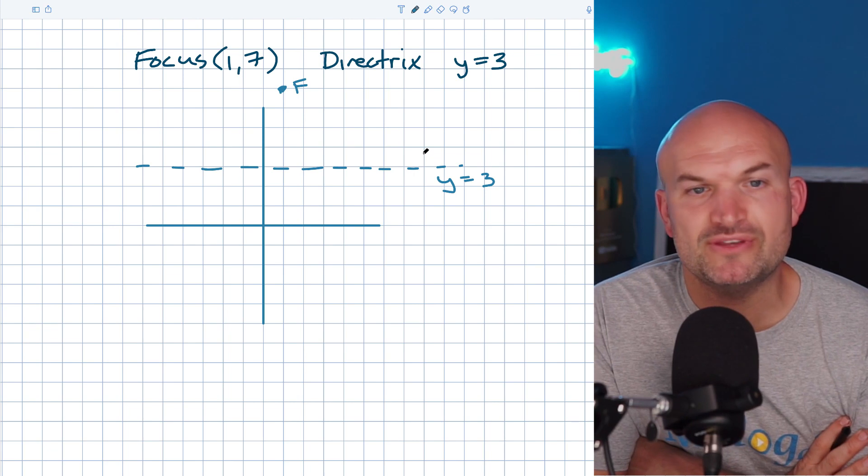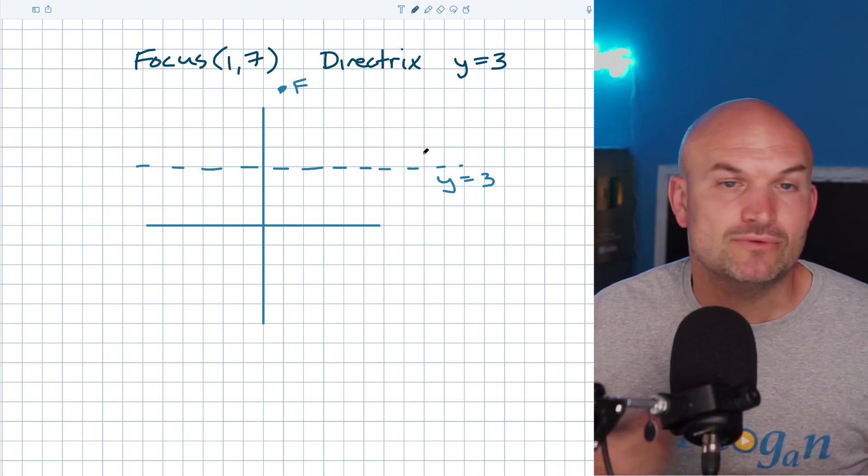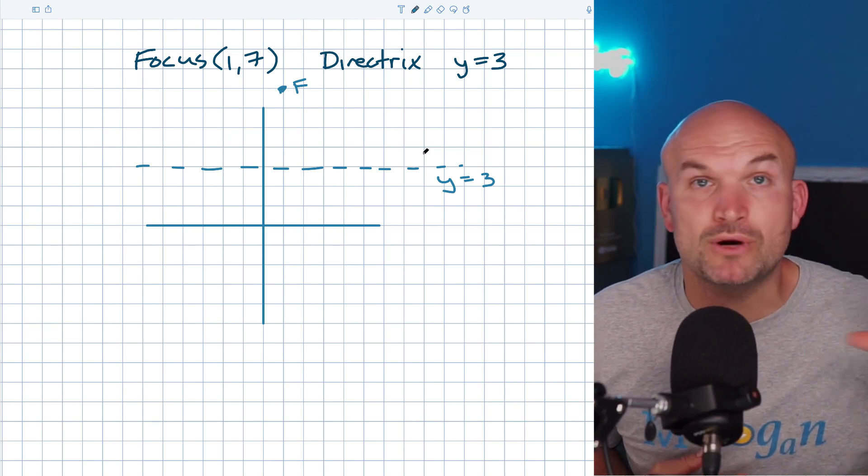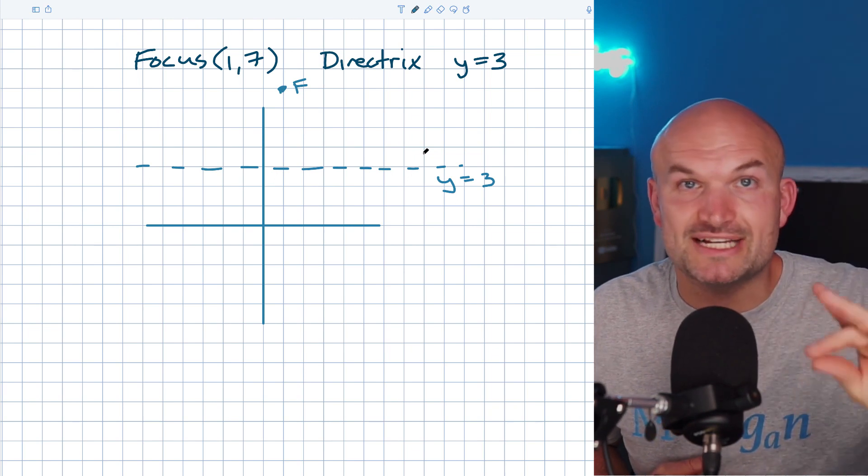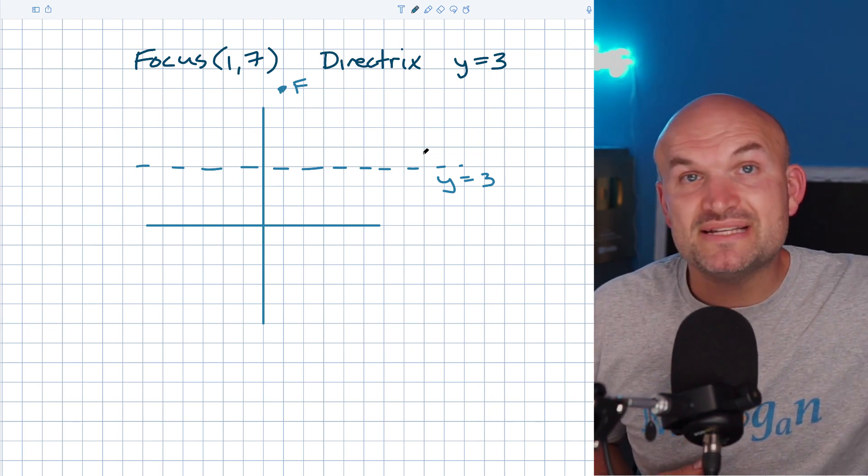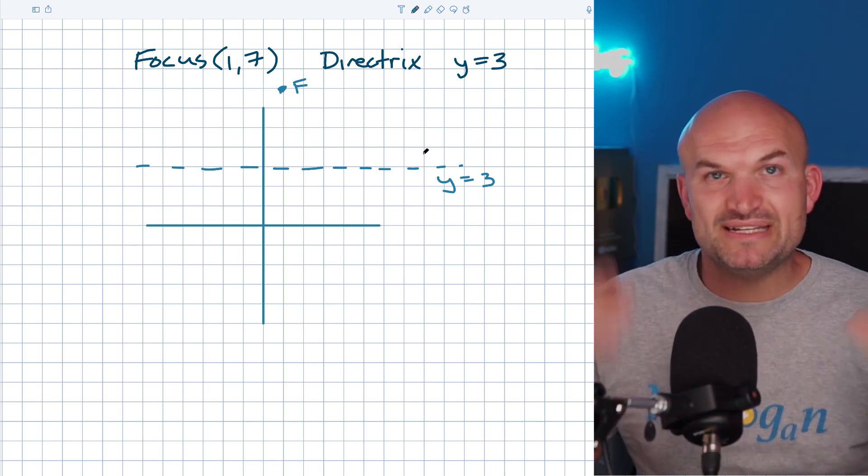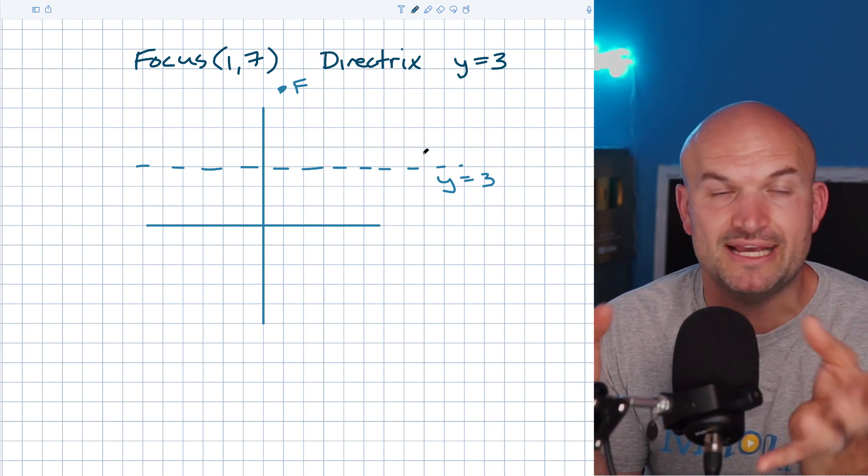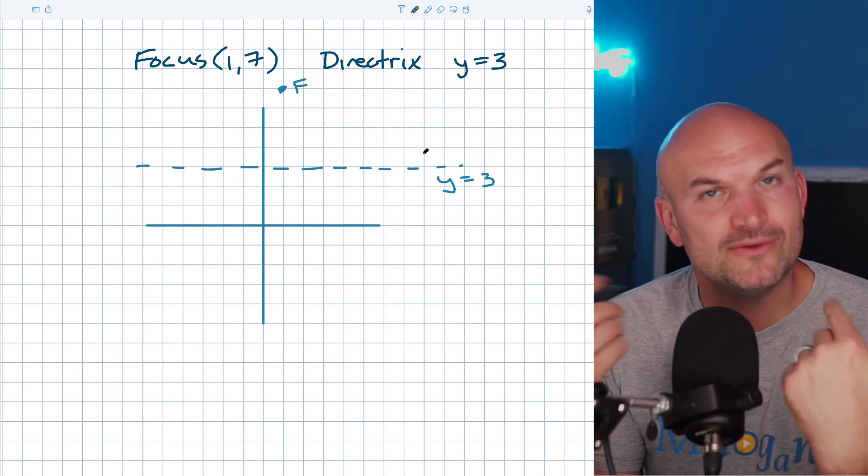We need to understand the relationship between the focus and the directrix, or where the vertex is going to be in relationship to them. Remember, the value of p is the distance from your vertex to the focus. The opposite of p is the distance from your vertex to your directrix. Besides the direction, the distance is exactly the same.